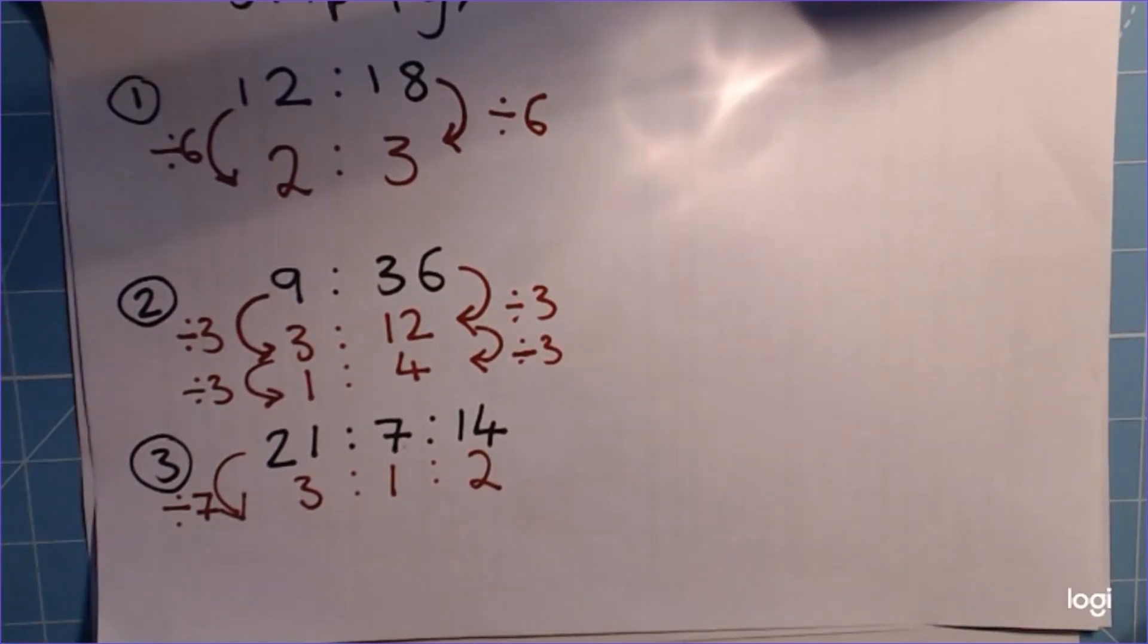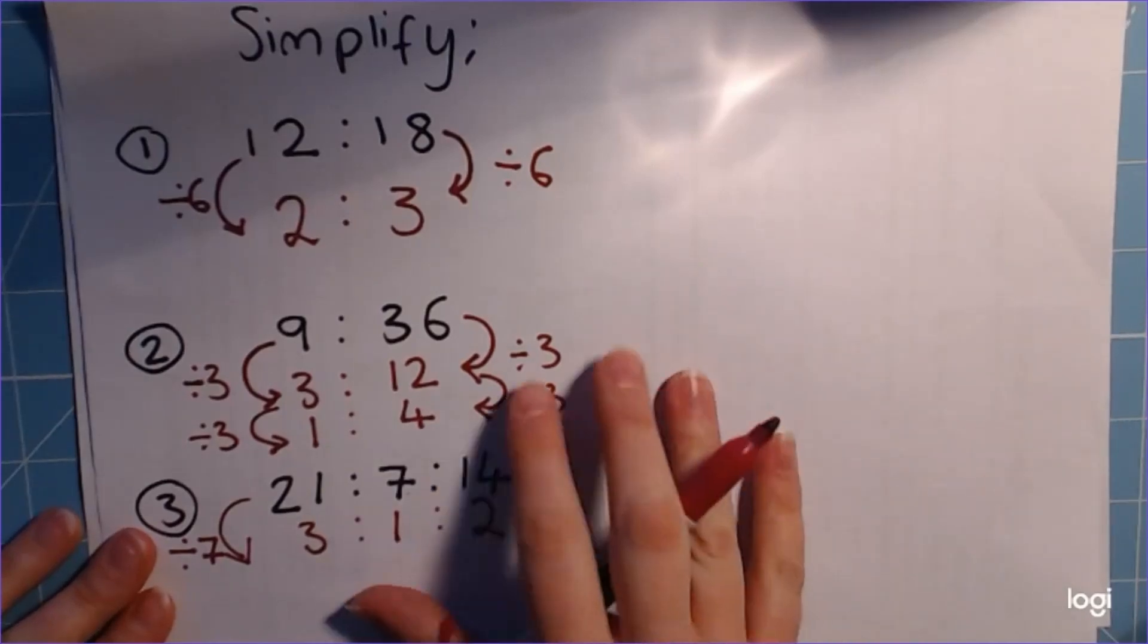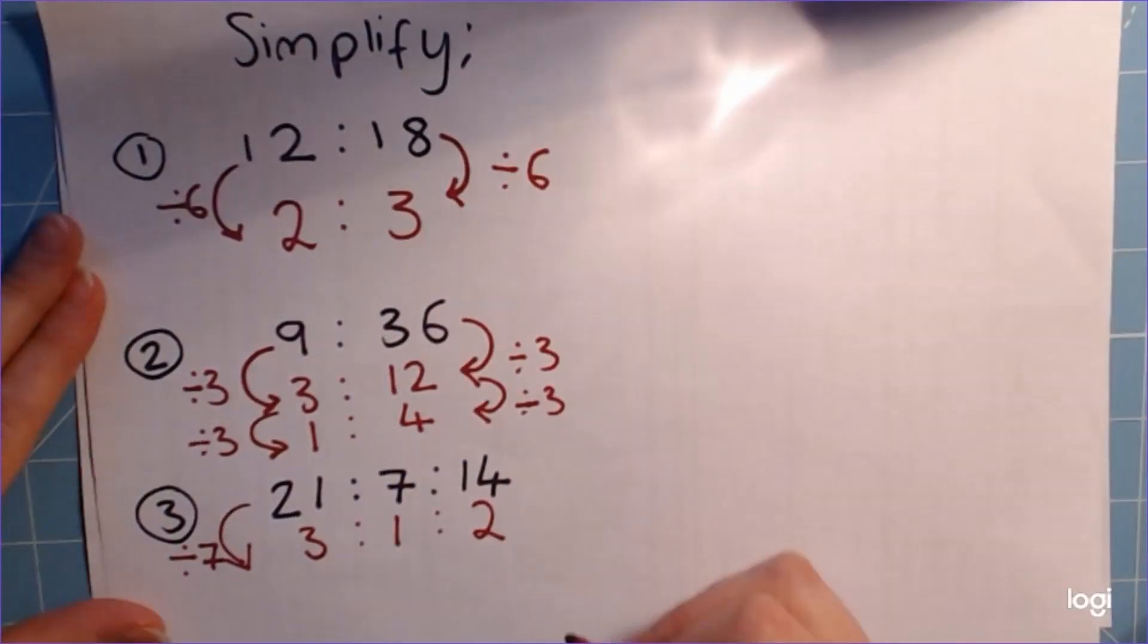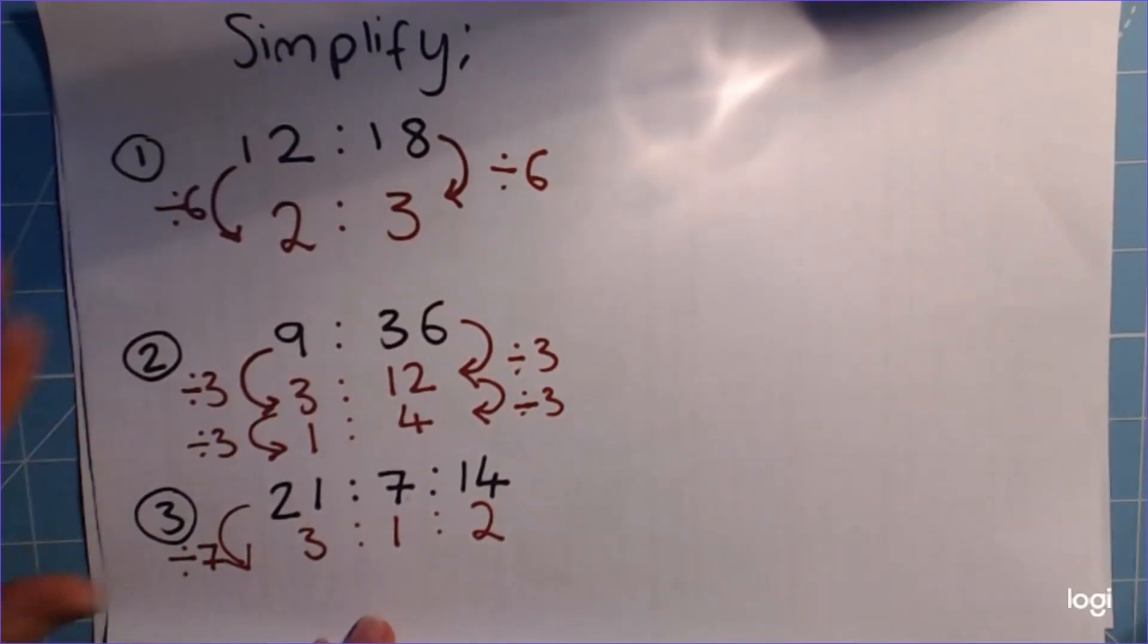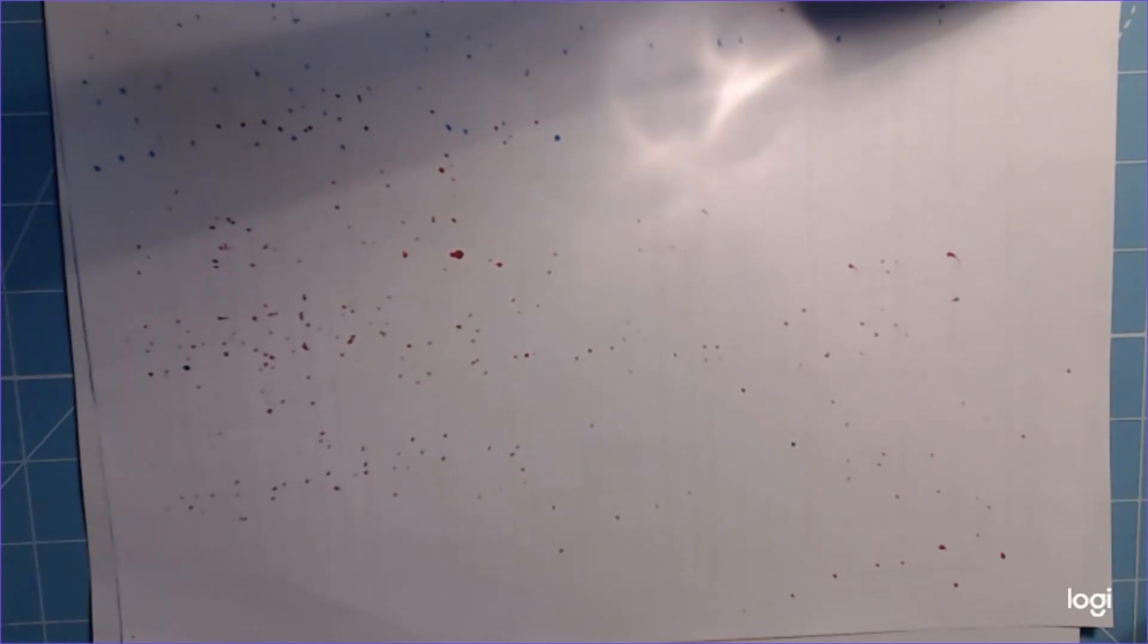And that won't simplify any further. So pop those in your book, label them off as an example. There will be a worksheet to accompany these. Once you've done those, we're going to have a look at these.